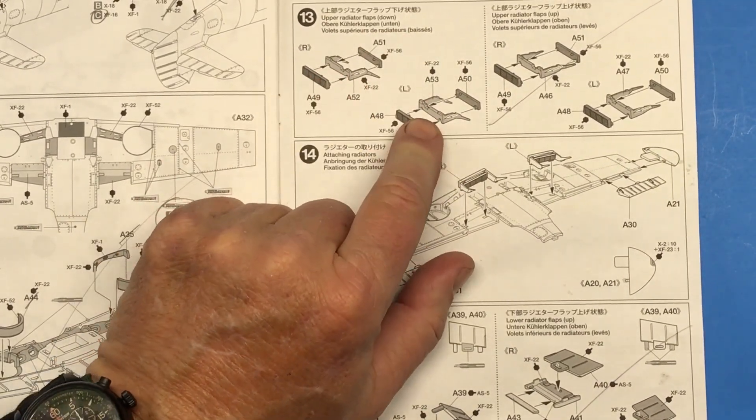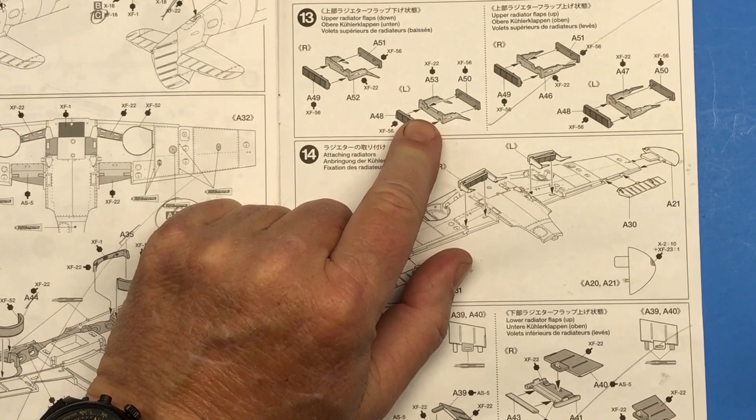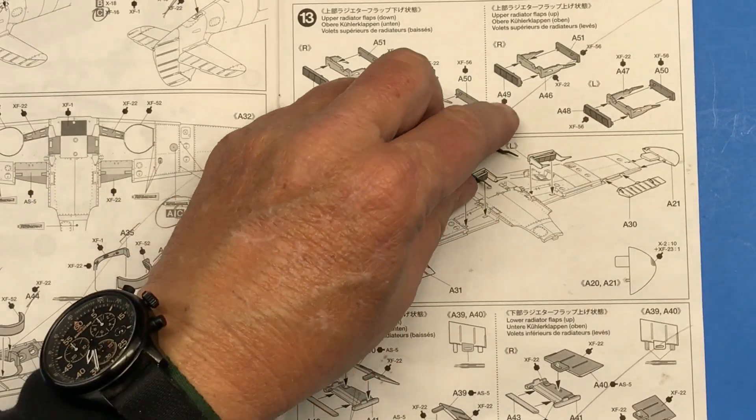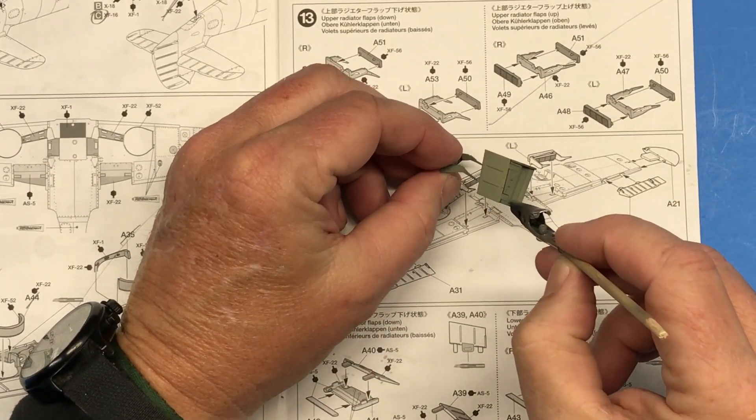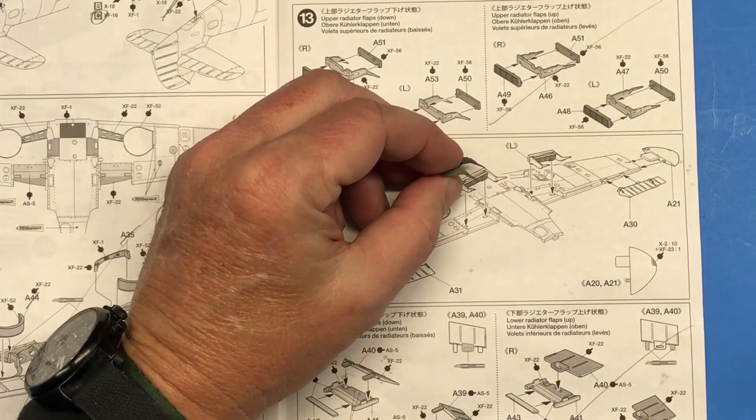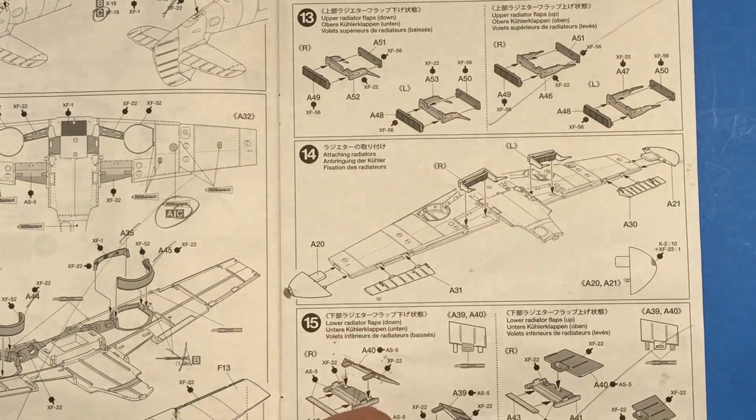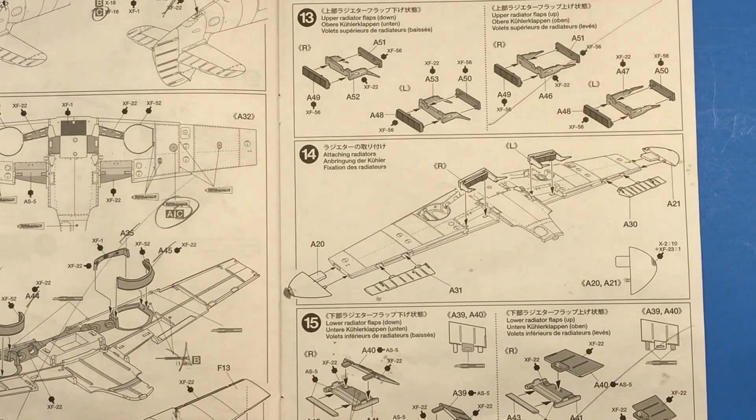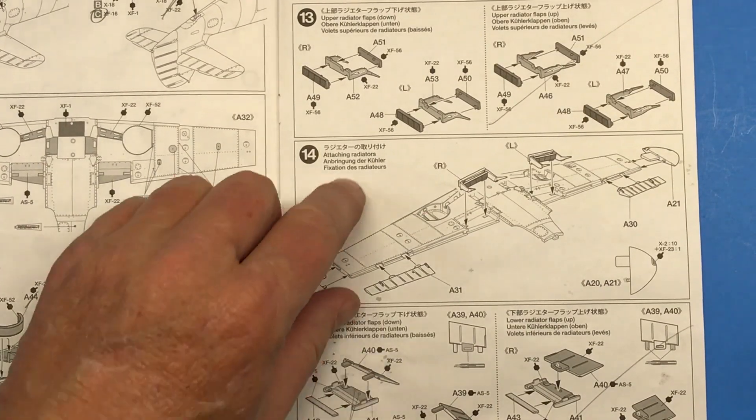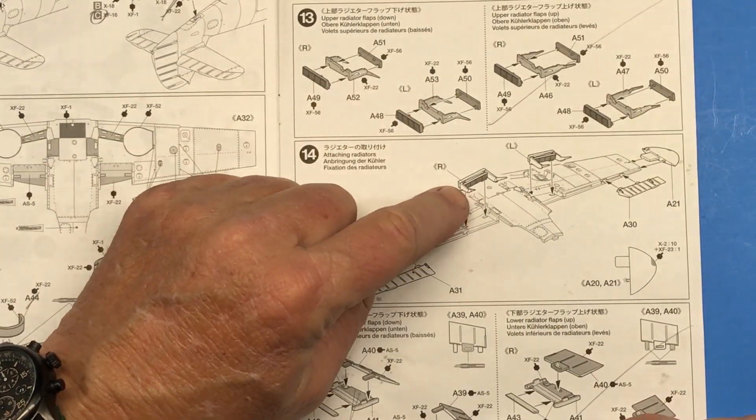Then I got all these parts here for the upper radiator flaps which I'm doing in the down position. I got those and got those painted up. I used RLM 02 for that per the instructions. So I got those, got them assembled.